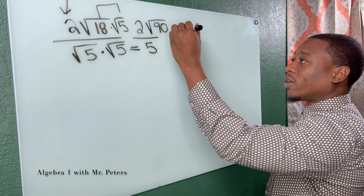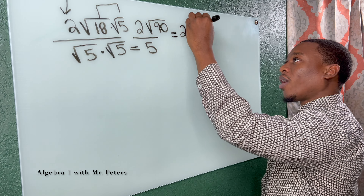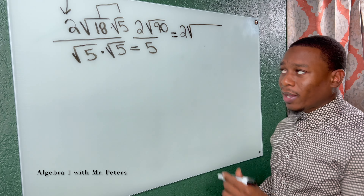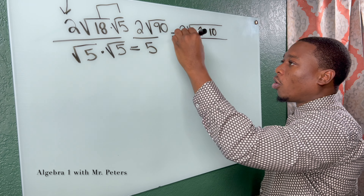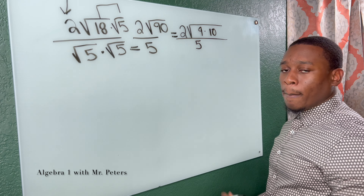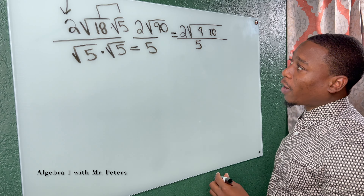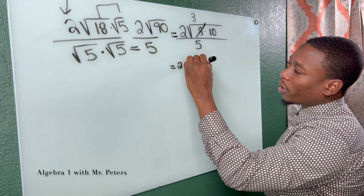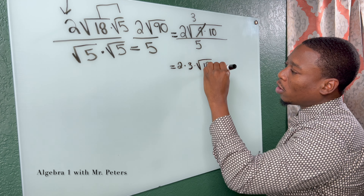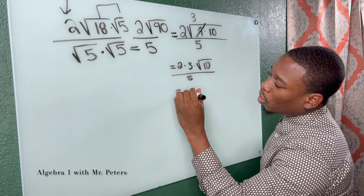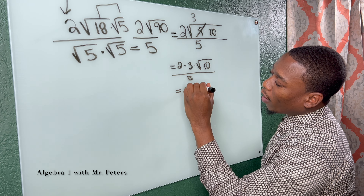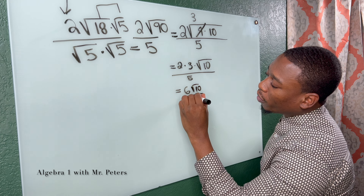So let's write this equal sign now. 2 times radical 90 — we could break that down as the square root of 9 times 10, all over 5. Now once we simplify more, 9 comes out and it turns to 3. So now we have 2 multiplied by 3 multiplied by radical 10, all over 5, and my final answer would be 6 radical 10 over 5.